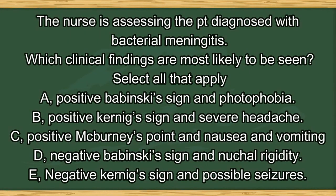Next question. The nurse is assessing a patient diagnosed with bacterial meningitis. Which clinical findings are most likely to be seen? Select all that apply. A. Positive Brudzinski sign and photophobia. B. Positive Kernig sign and severe headache. C. Positive McBurney's point and nausea and vomiting. D. Negative Brudzinski sign and nuchal rigidity. E. Negative Kernig sign and possible seizures.